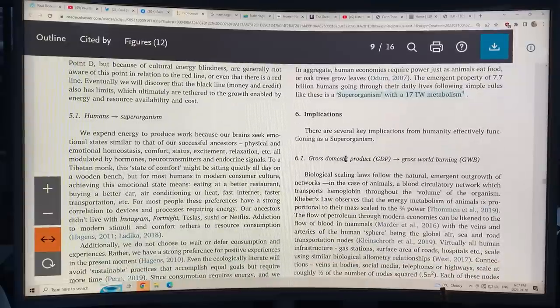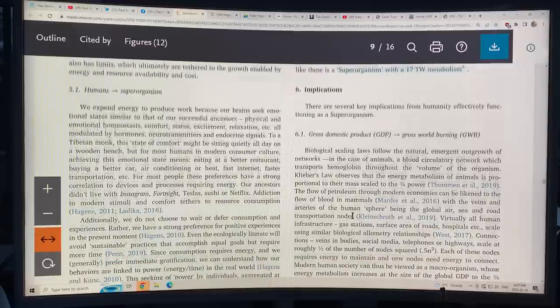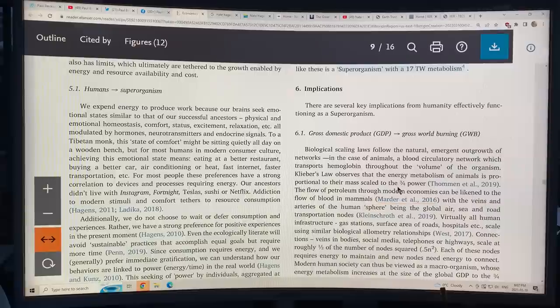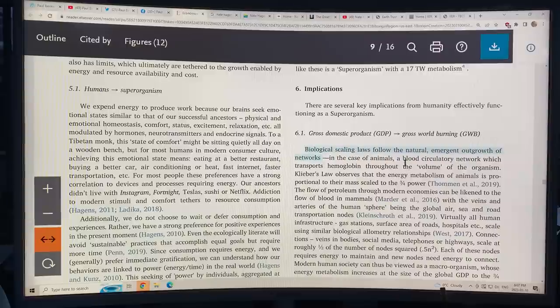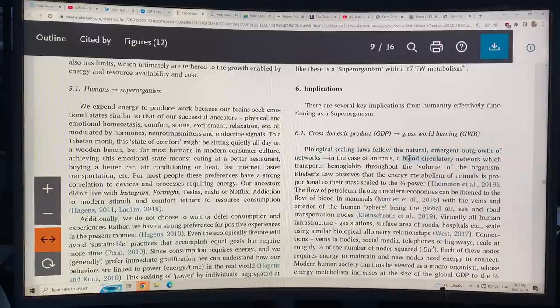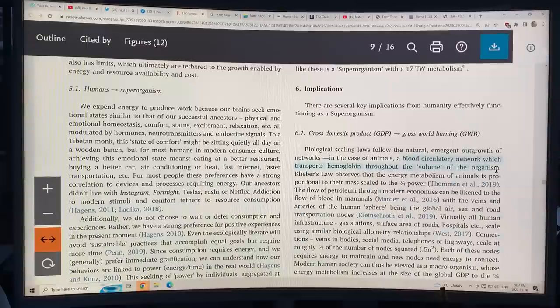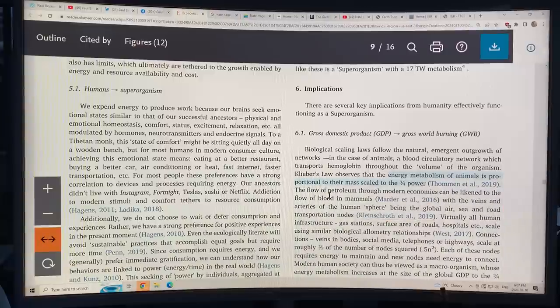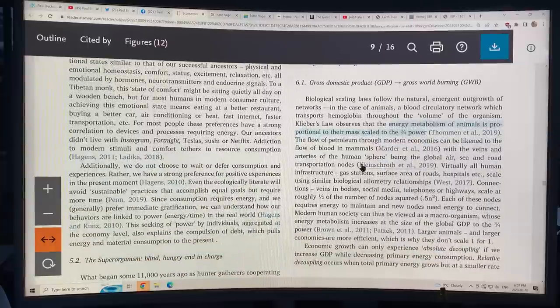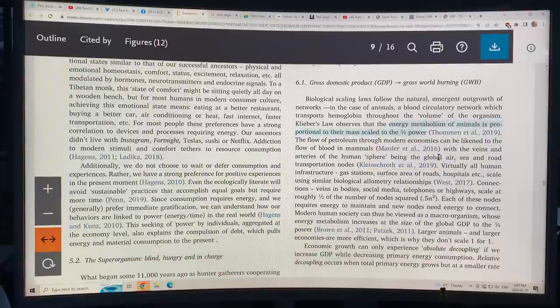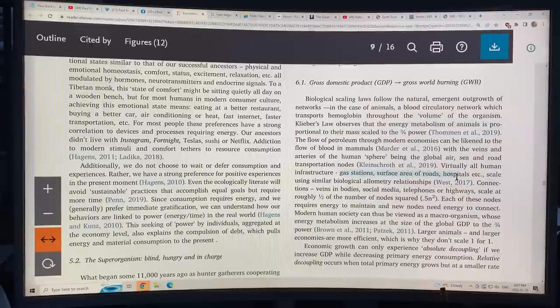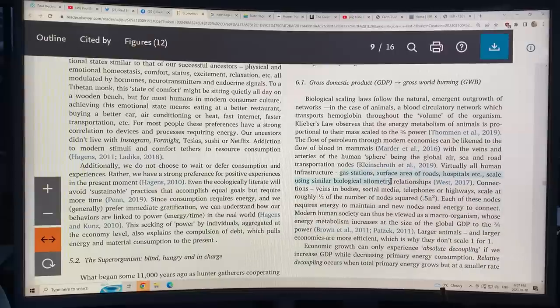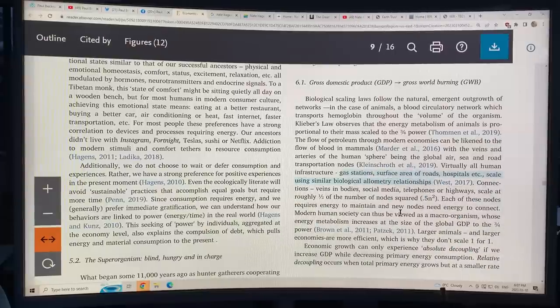There is basically biological scaling laws. They follow the natural emergent outgrowth of networks. In animals, we have a blood circulatory network. It transports hemoglobin throughout the volume of the organism. The energy metabolism is proportional to the mass to the three-quarter power. The flow of petroleum in modern economies is linked to the flow of blood in mammals, with the veins and arteries being the global air, sea and road transportation nodes. Virtually all human infrastructure, gas stations, surface area of roads, these things scale using similar biological relationships.